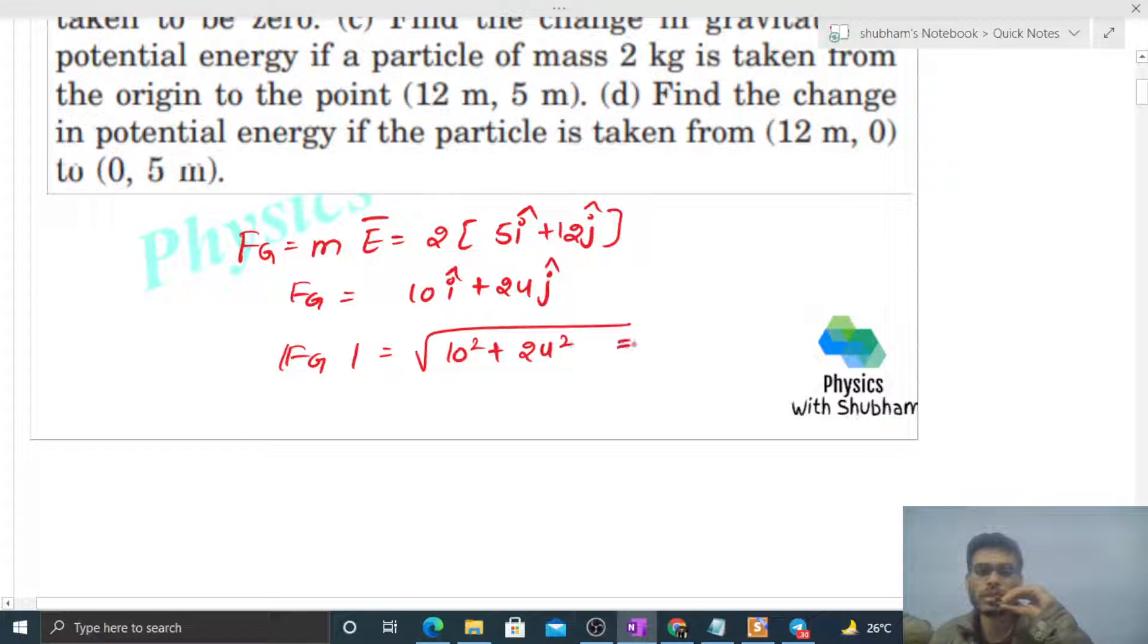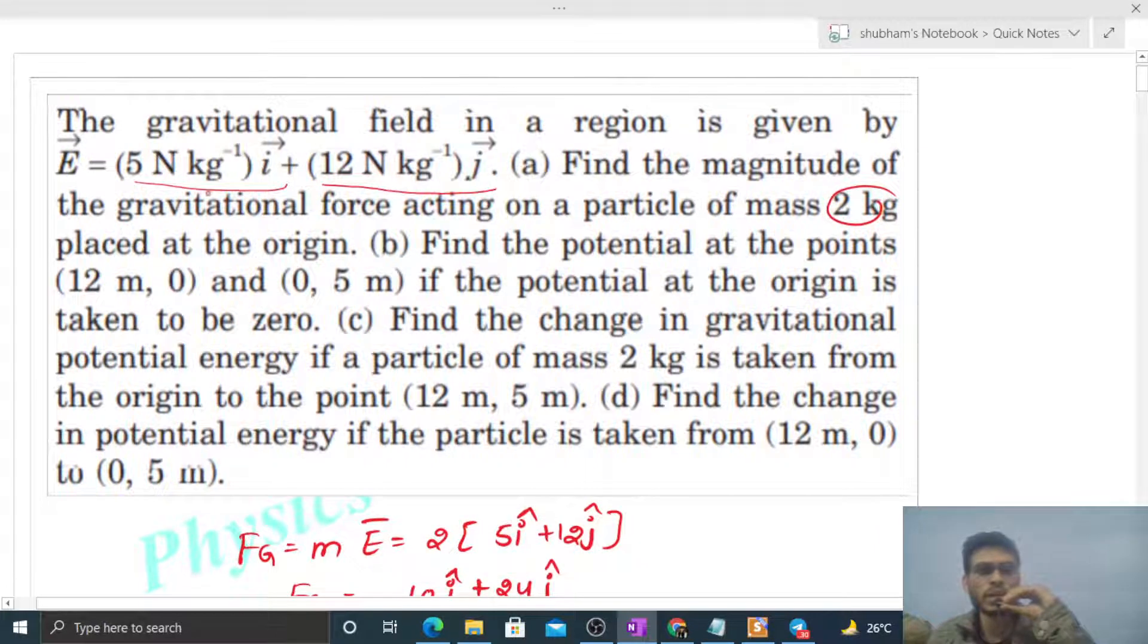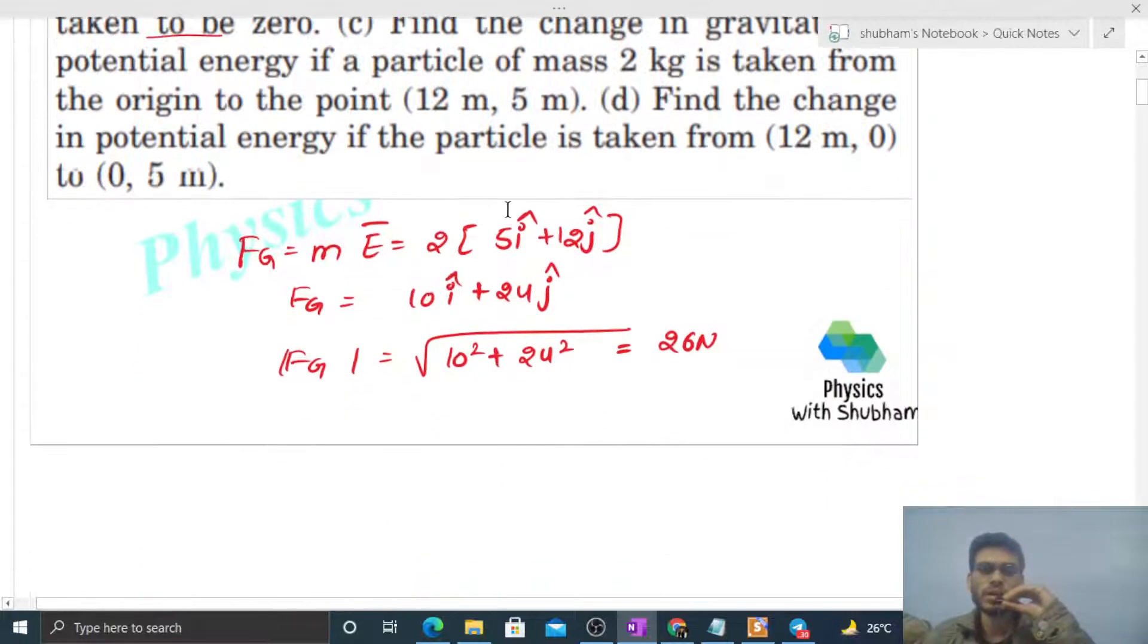Part (b): Find the potential at points (12,0) and (0,5) if the potential at the origin is taken to be zero.